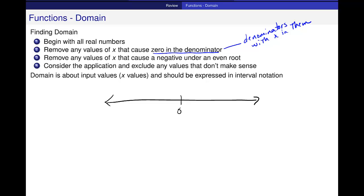The next thing that we look for at this point, or another function that we know, remove any values of x that cause a negative under an even root. So I'm looking for even roots with variables.